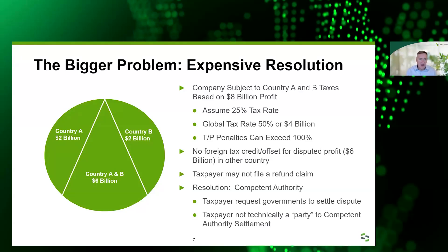There is a real cost for getting this wrong. There's no guarantee your case is going to be accepted by competent authority even if you submit all the proper documentation. Just the entrance fee to get into competent authority itself exceeds $30,000. I've seen cases where it's eight years before there's any kind of resolution. The IRS APMA is getting better at this, but the key thing is there's a real cost in terms of time and expense for getting this wrong.